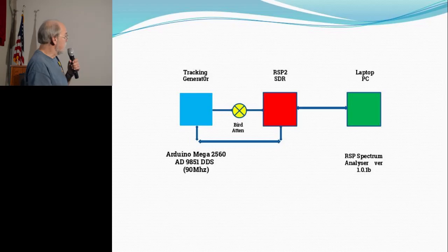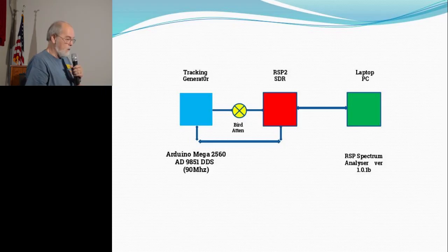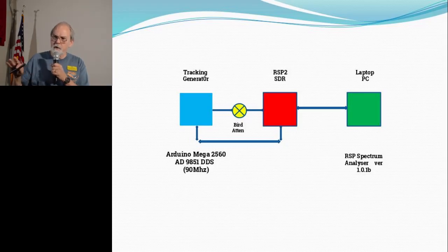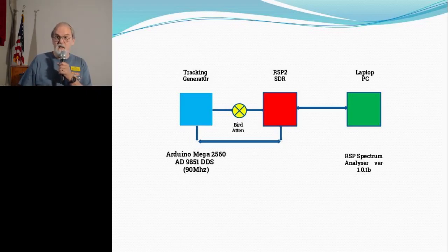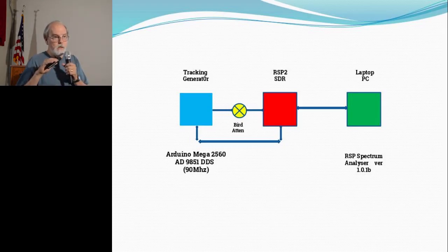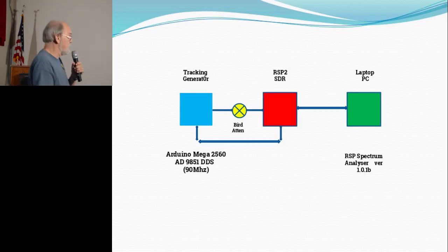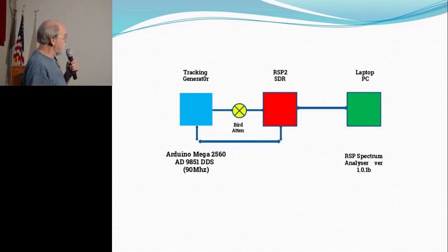We're going to take a tracking generator that I built on the little board over there and feed that through a Bird attenuator. The output of the tracking generator is about 350 millivolts — you do not want to feed that straight into the front end of your software-defined radio. So you take it down; I took it down to about minus 70 dB, which is where I want it to be. The SDRs can handle up to about minus 10 as a maximum input signal, so you have to protect your device. That's the setup, and then there's the feedback between the SDR and the generator itself.